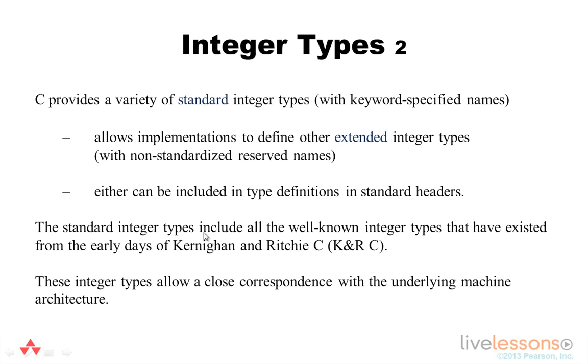C also provides a variety of standard integer types using keyword-specified names and allows implementations to define other extended integer types using non-standardized but reserved names. Either of these can be included in type definitions in the standard headers.